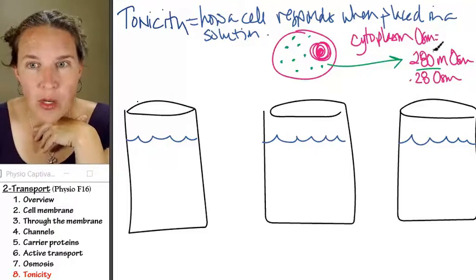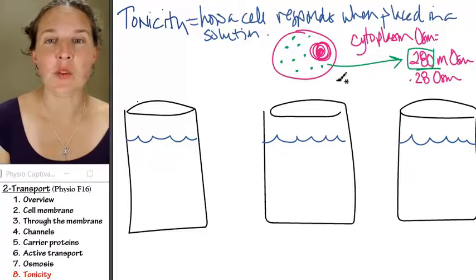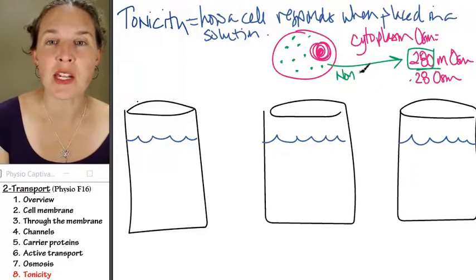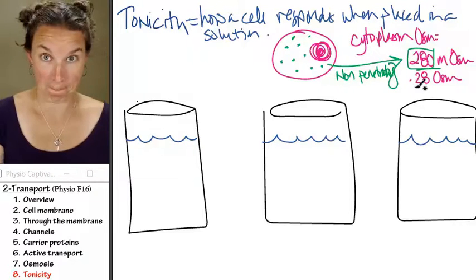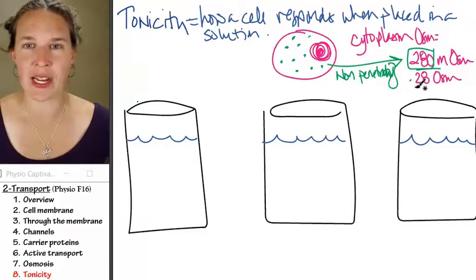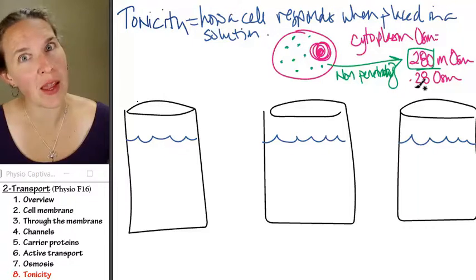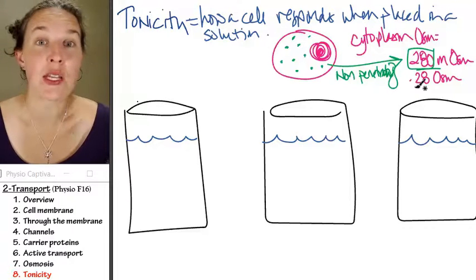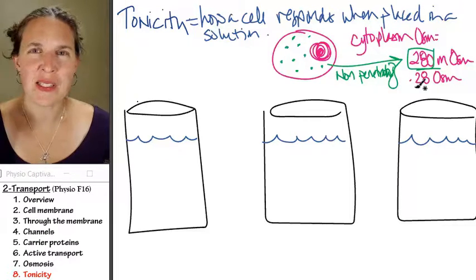The answer is no. All of those particles that are contributing to the 280 milliosmoles are non-penetrating, and you can take it to the bank. If they could penetrate the cell membrane, they would, and they'd get out, and they don't because they're non-penetrating.